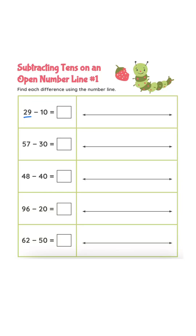29 minus 10. 29 minus 10 is 19. Answer is 19.